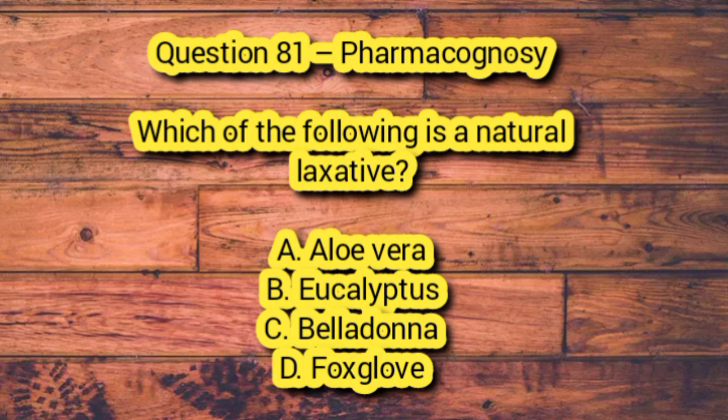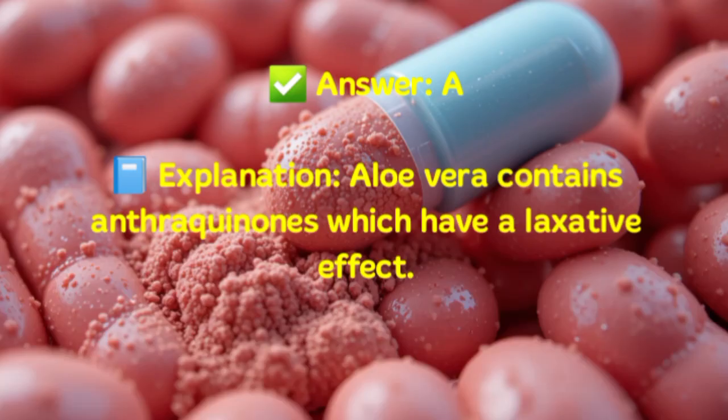Question 81 – Pharmacognosy. Which of the following is a natural laxative? A. Aloe vera. B. Eucalyptus. C. Belladonna. D. Foxglove. Answer: A. Explanation: Aloe vera contains anthraquinones which have a laxative effect.